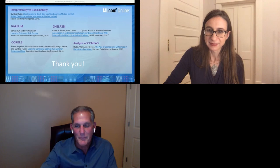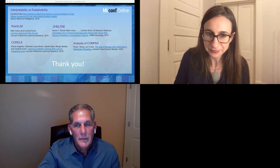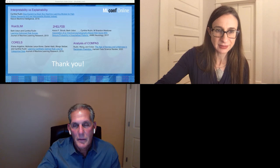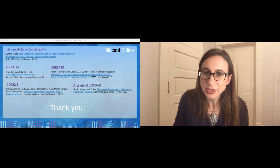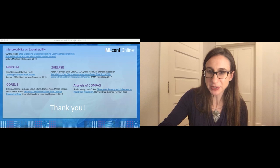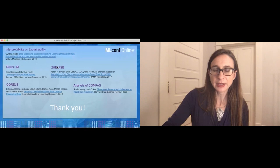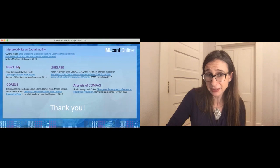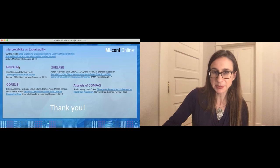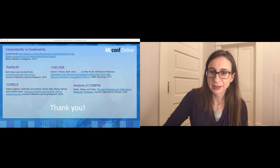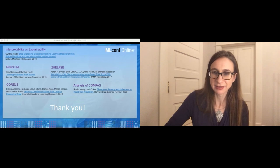There's a question about how we solve the optimization problem for the 2HELPS2B score. The reference is on screen. The algorithm that solved that optimization problem is called RISKSLIM — it's a cutting plane method with elements of branch and bound. It's a fairly sophisticated optimization method, and I'm happy to talk to you if you want to try it out.